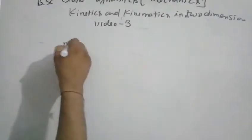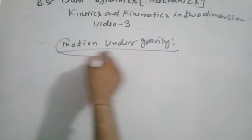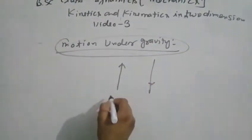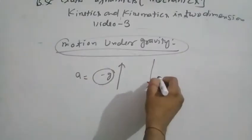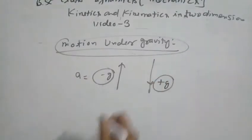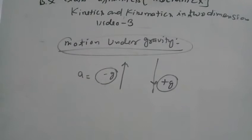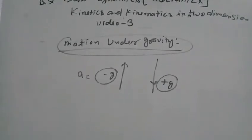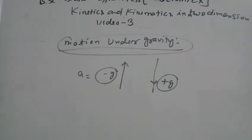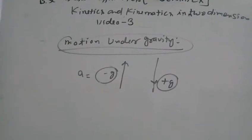Motion under gravity: when a particle goes upward, acceleration is minus g, and when going downward, acceleration is plus g. When a body is freely falling downward with constant acceleration, the acceleration due to gravity is taken as g. When moving vertically upward, the acceleration will be minus g, and downward it's plus g.